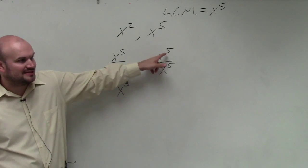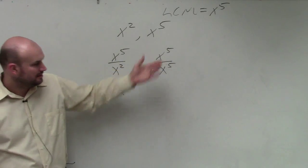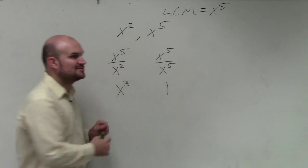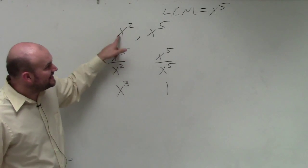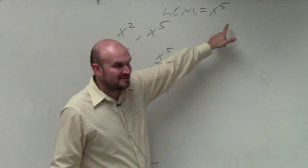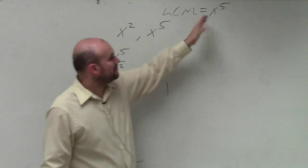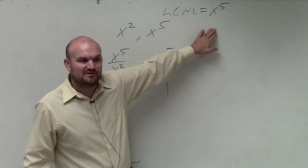Does x to the fifth divide into x to the fifth? Yeah. That's one time. So both of these divide into x to the fifth, right? So therefore, your least common multiple is x to the fifth in this case.